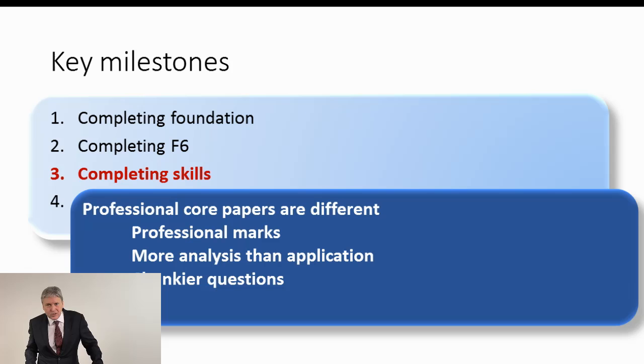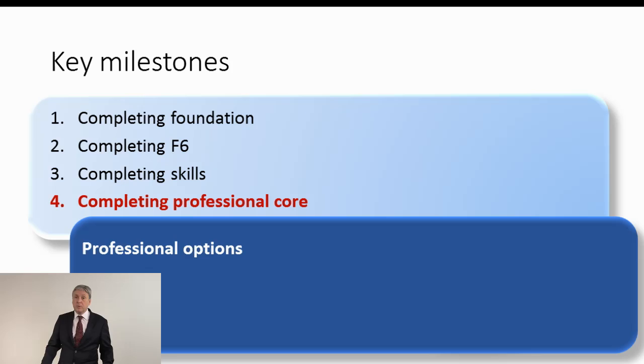Chunkier questions. Yes, I couldn't think of a better way of saying that. But the questions tend to be bigger. And so, it's not just a relatively brief 10 or 15 marker. We may be getting a 25 or even a 30 mark question here. And bear in mind that a 30 mark question is almost an hour of your time. An eon in the exam hall. And then, once we've completed the professional core, P1, P2, P3, we're on the home straight now. We're on the home straight. We're nearly finished. And given that we've nearly finished, we've got to look at the professional options. And if we look at the professional options, oh, we have to choose.